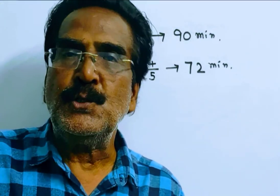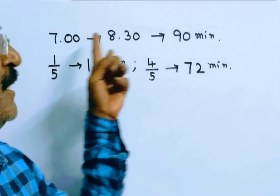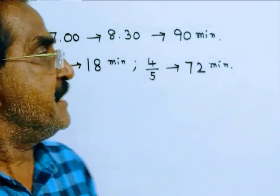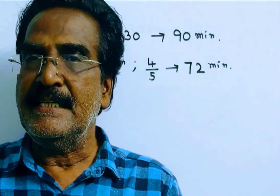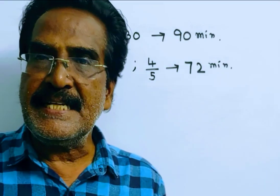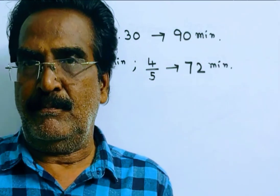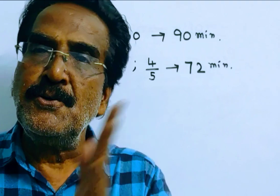Here Devesh leaves home at 7 a.m. and reaches office at 8:30 a.m. That means he takes 90 minutes. This 90 minutes is his usual time.